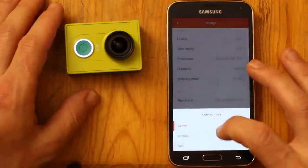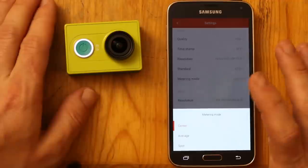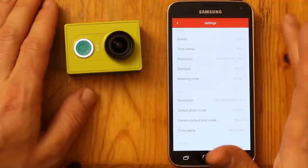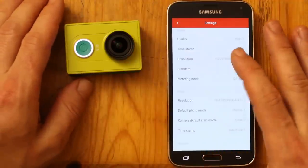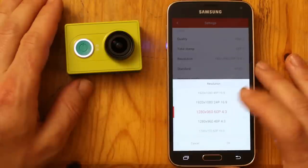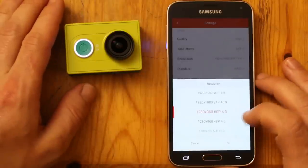The metering mode, center, average, spot. So, the video can only be 16 to 9 at the high resolution. If you want 4 to 3, then you're stuck with a 1280 by 960 resolution.